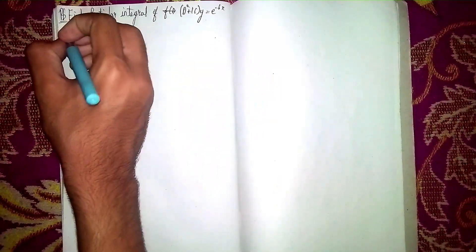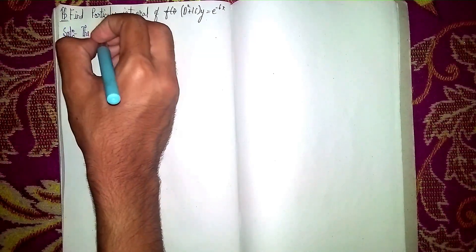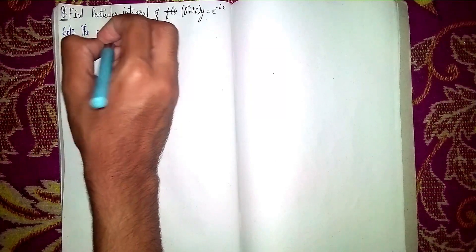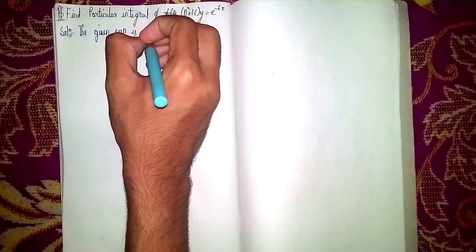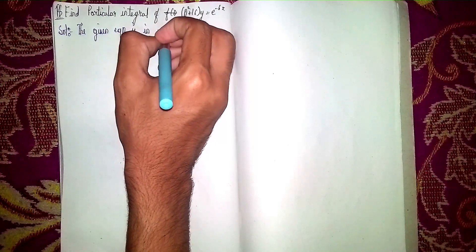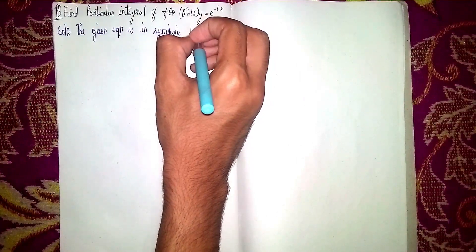So write the first solution, then write the first statement. Okay, the given equation is in symbolic form. Always write the statement; you will get full marks. Okay, in symbolic form. First, this is in the symbolic form. After that, write the question first here.